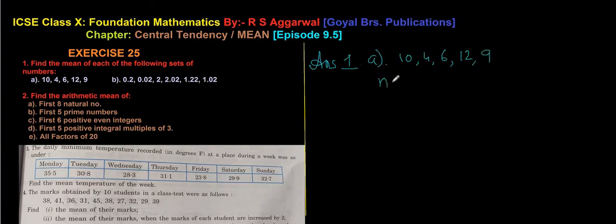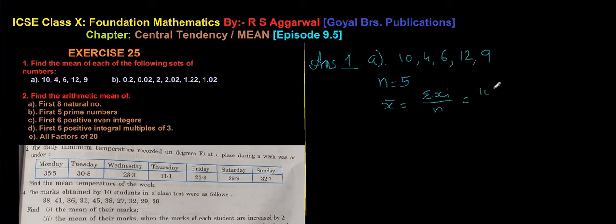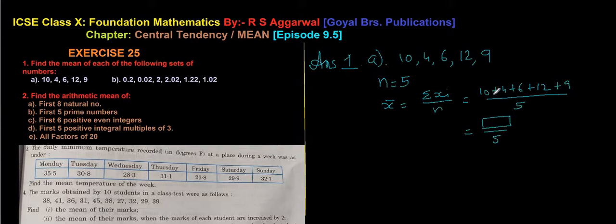First, write down how many observations there are: n = 5. The formula for finding the mean is x̄ = Σxᵢ / n = (10 + 4 + 6 + 12 + 9) / 5. Add those values and divide by 5 to get x̄.